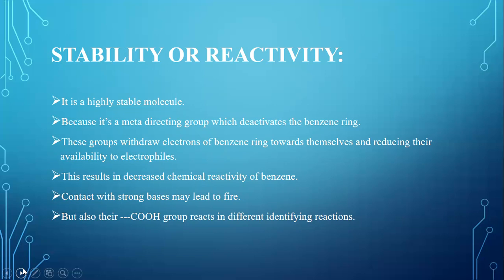Moreover, due to electron-withdrawing effect of such substituents, the ortho- and para-positions are rendered more electron-deficient than the meta-position. Thus, the incoming electrophile will prefer to attack on meta-position rather than ortho- and para-position. And these groups are called as meta-directing groups.